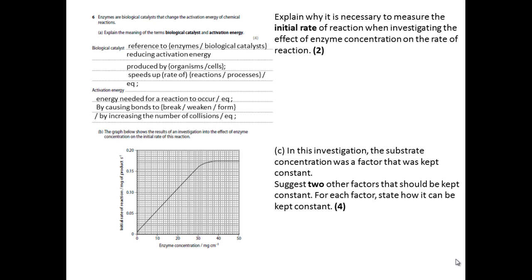The graph below shows the results of an investigation into the effect of enzyme concentration on the initial rate of this reaction. So what you can see here is the rate rising and then leveling off at roughly, that is about 0.175, give or take. So halfway between 0.15 and 0.2.